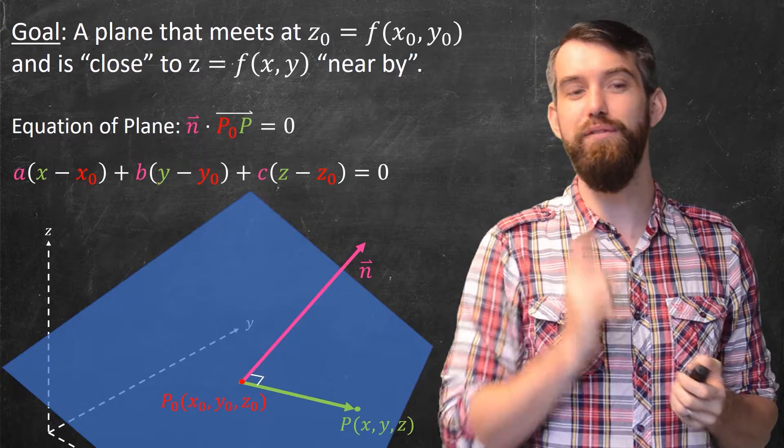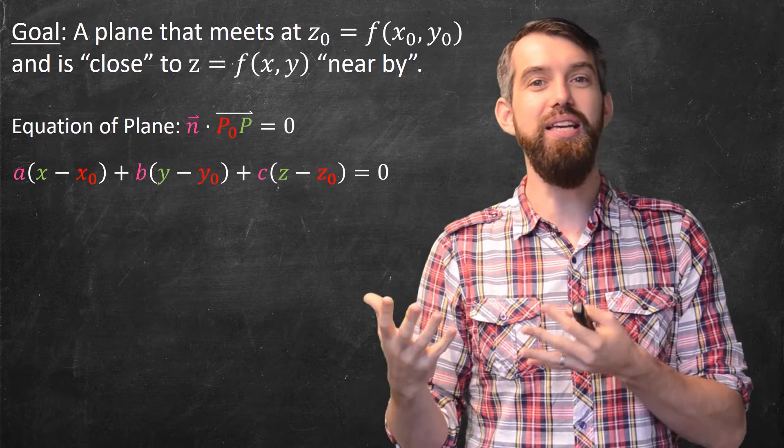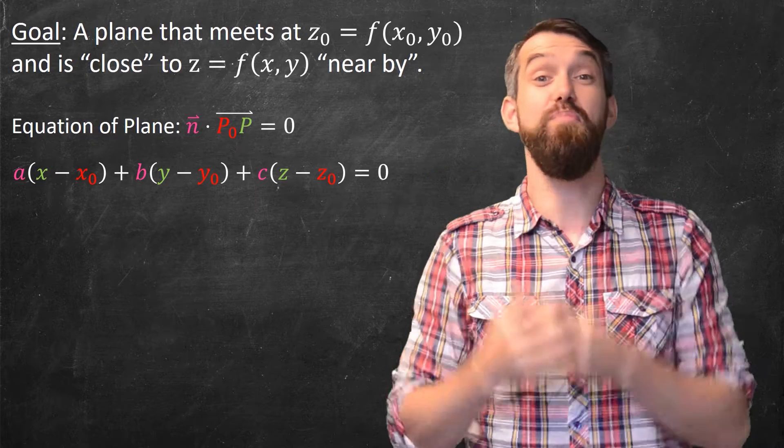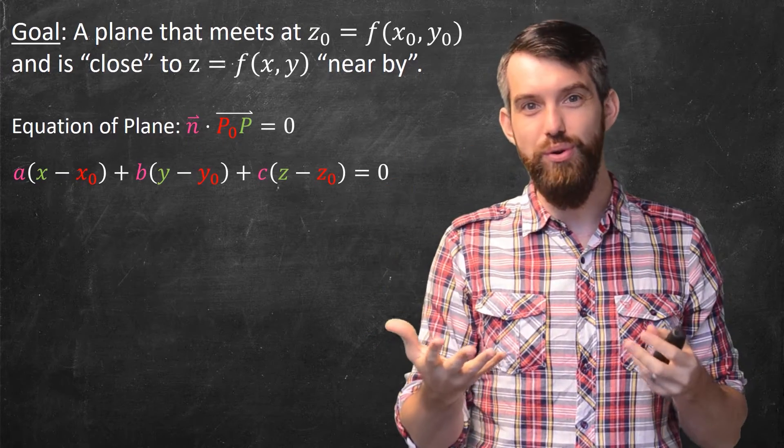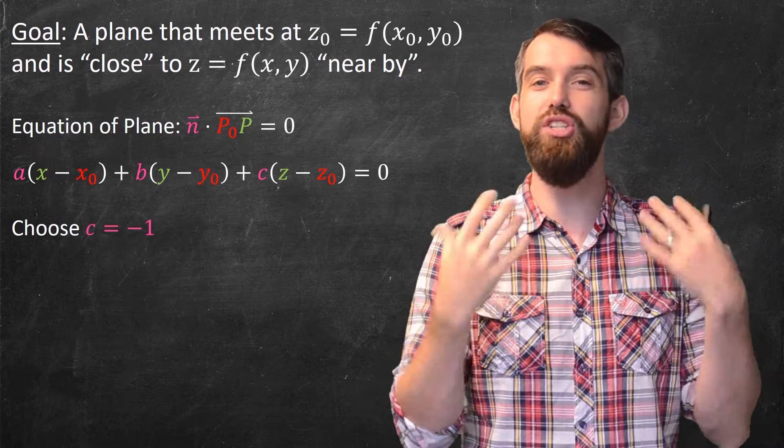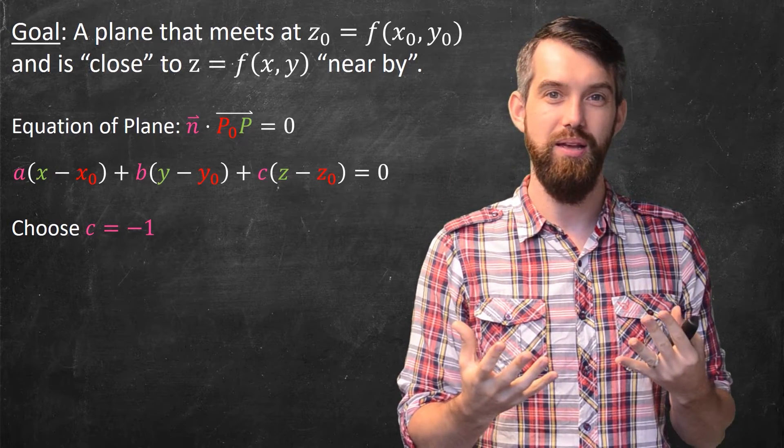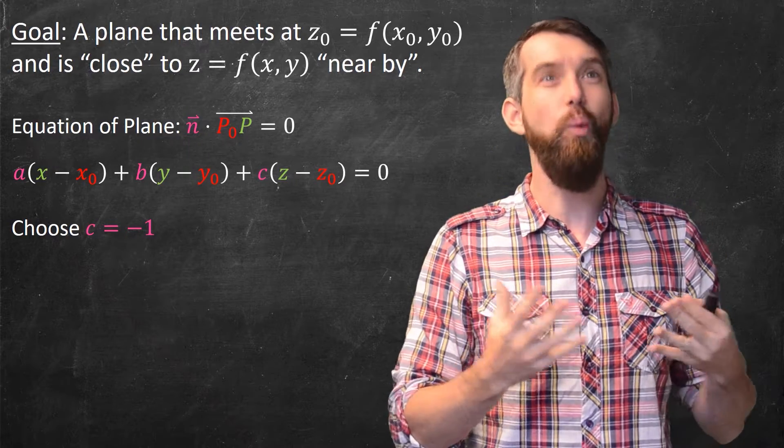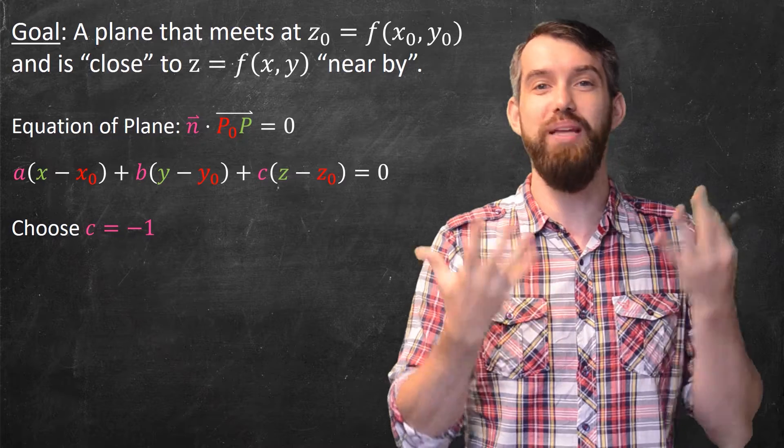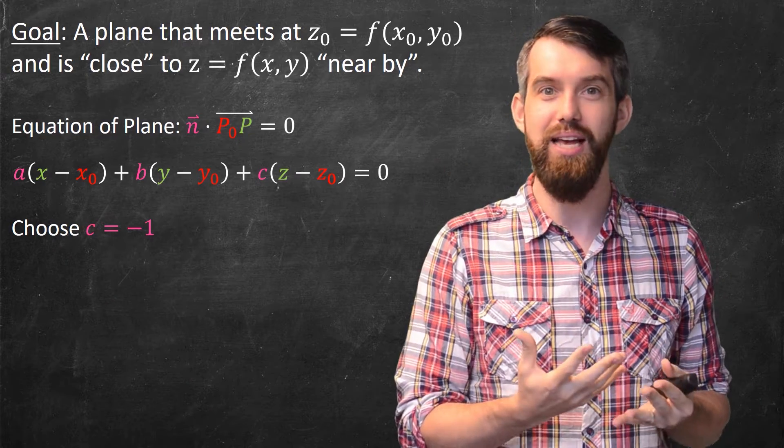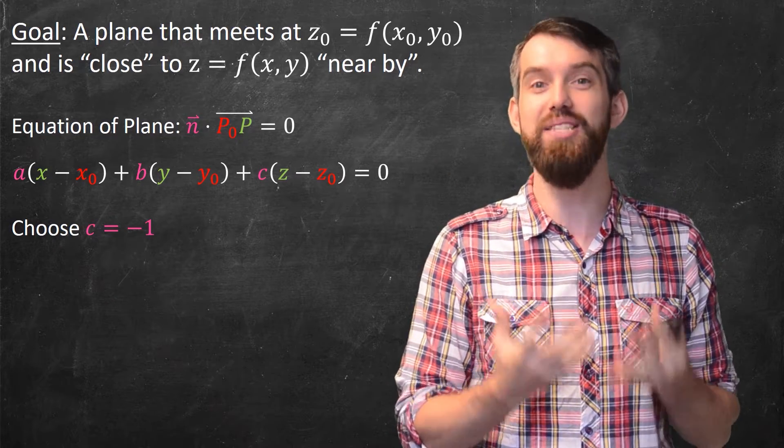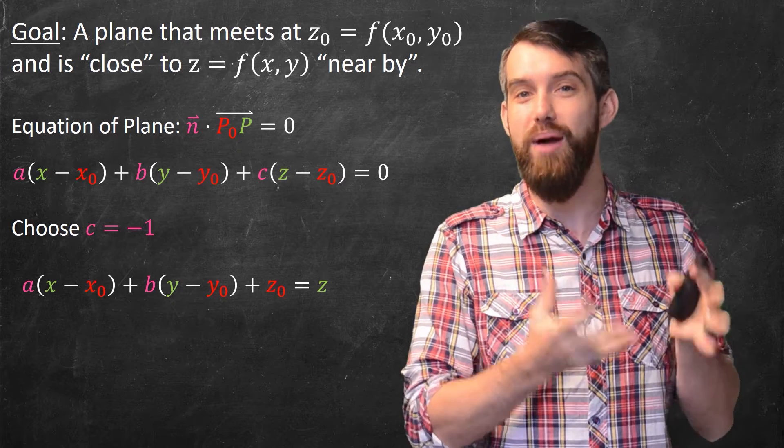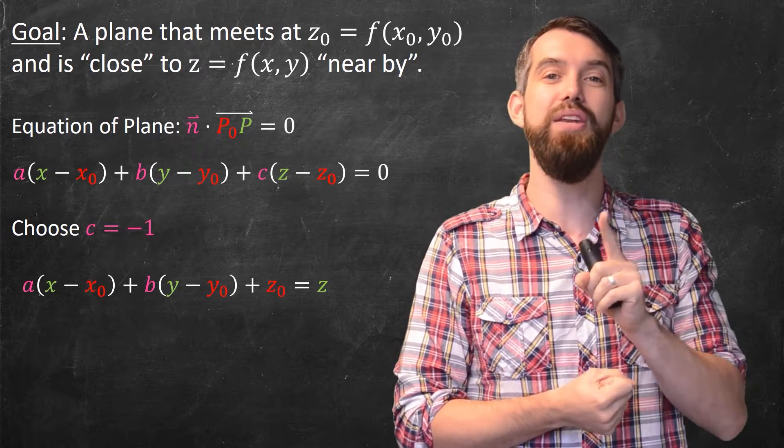I'm going to begin with the simplifying assumption. Imagine that c is any non-zero number. If that was the case, like it was, say, plus seven, I could divide through so that the coefficient of the z minus the z0 was just equal to the value of minus one. This always works unless it's c equal to zero, and I'm going to let you pause and think about why that is not relevant if I'm asking for a tangent plane to a differentiable function. Nevertheless, if I make this simplifying assumption that c equal to minus one, then I can clean out my formula a little bit. I get the same a x minus x0 and b y minus y0, but then I say plus z0 equals z.